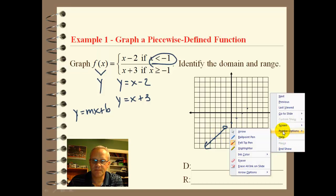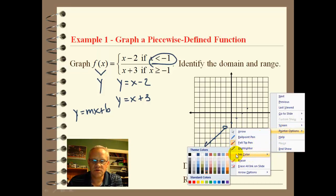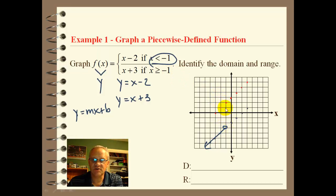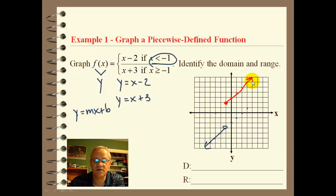Now let's look at the other equation. The y-intercept is 3, so I go up to 3. The slope is also 1, so I go up 1 over 1. We're only going to use the part where x is equal to negative 1 or greater. So we start at negative 1 — this time it's filled in because it's equal to — and we use all the x's to the right. So that's what our graph looks like. It's the two parts combined together, kind of in pieces, and that's why they call it piecewise.